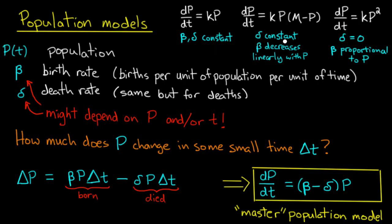For the logistic equation, delta is constant and beta decreases linearly with the population. Now for this blowup model, delta is 0 and beta is proportional to the population.